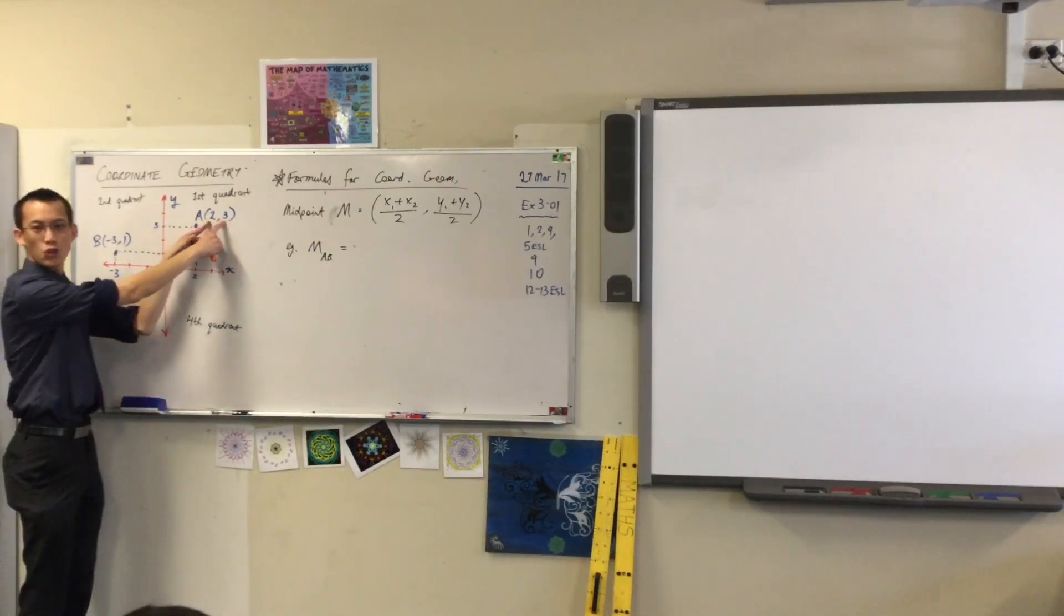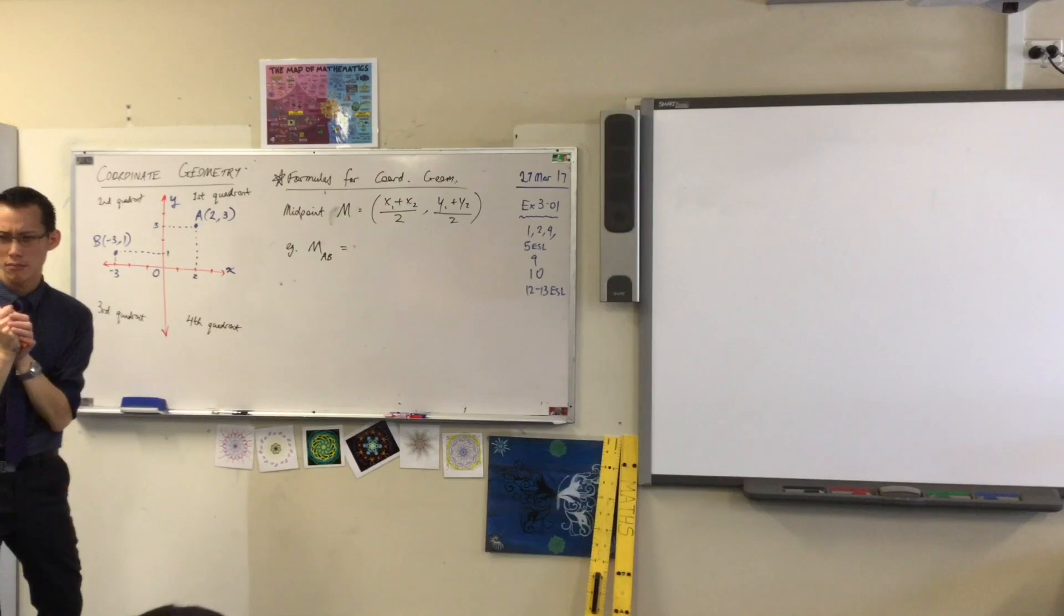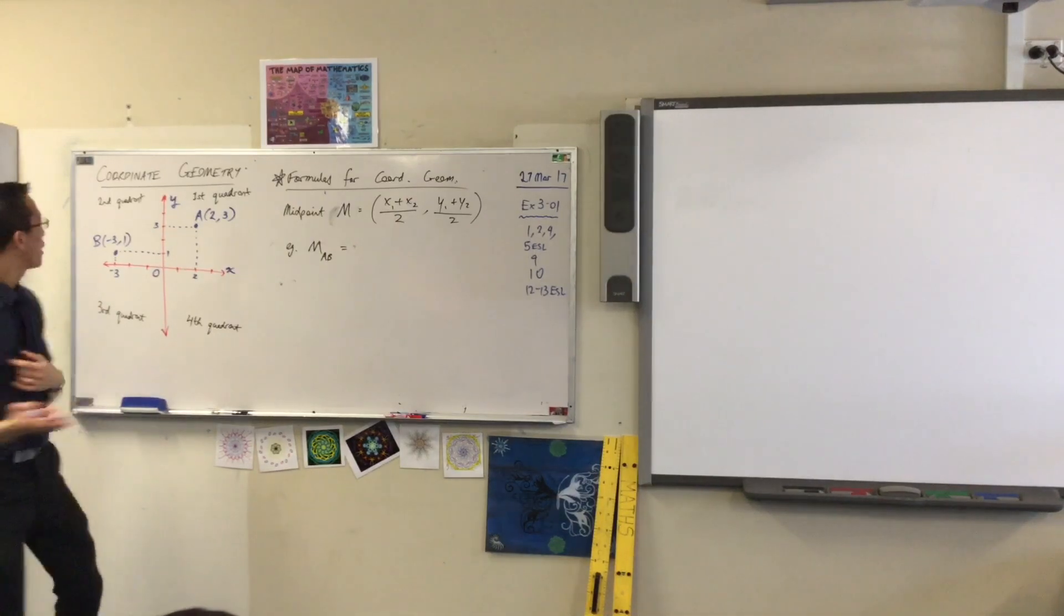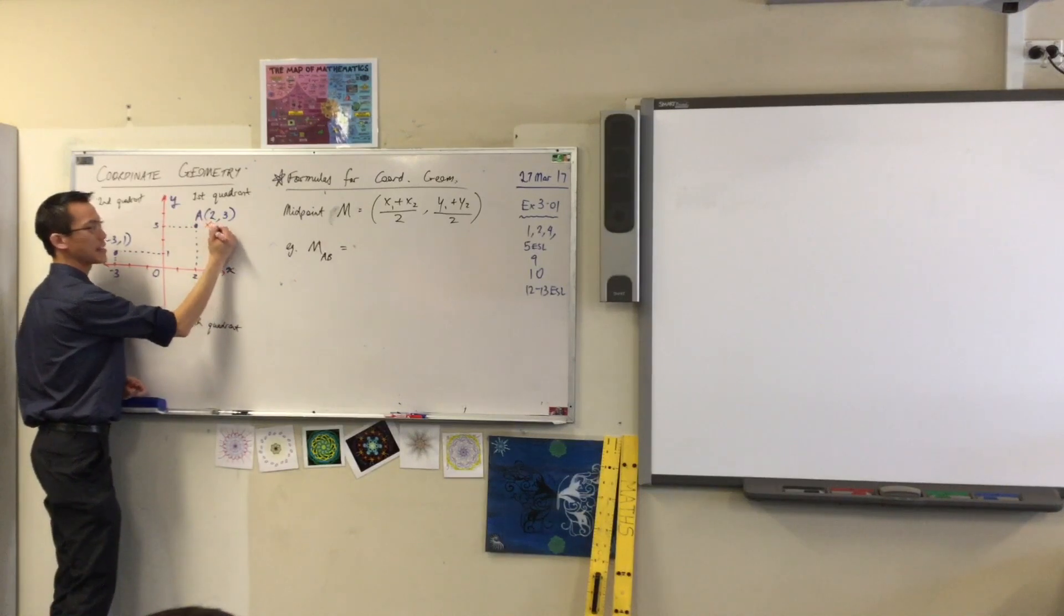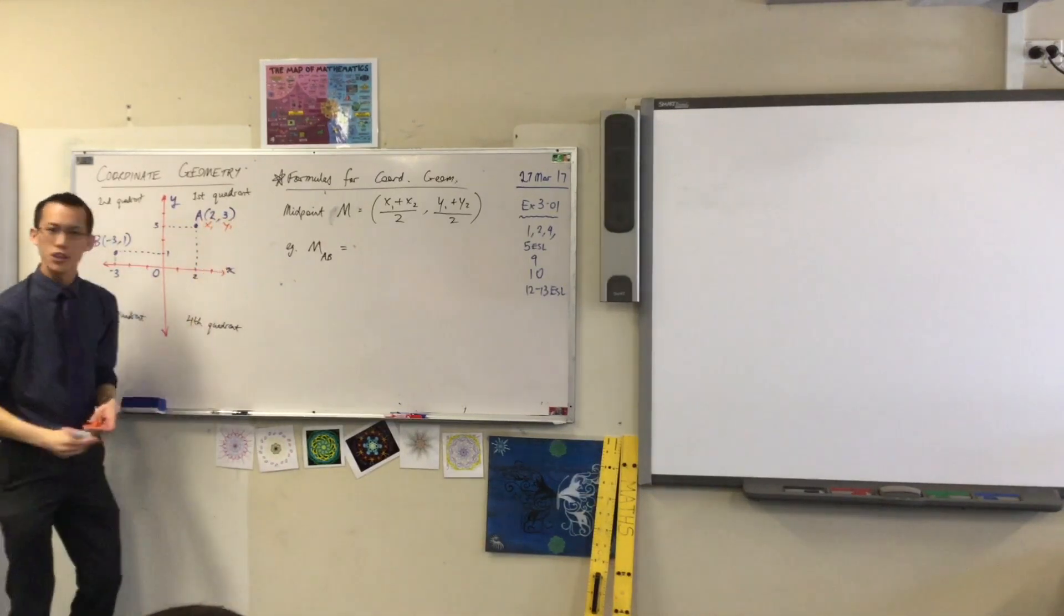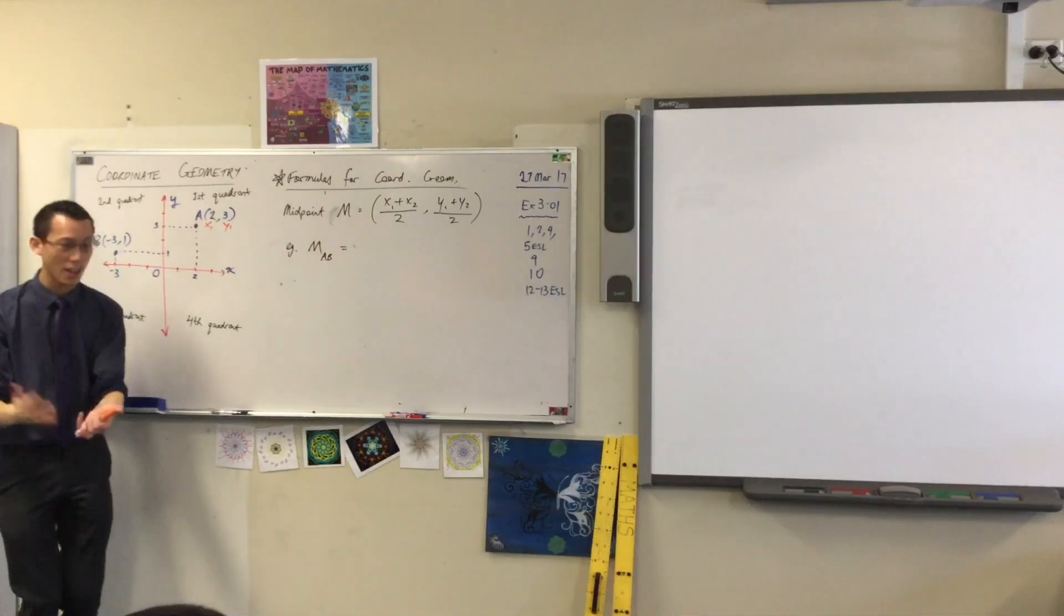I'm actually going to label onto my coordinates which ones are the x's and which ones are the y's. So have a look here. 2, 3. Which one's the x and which one's the y? 2 is x. The x is the 2? Yeah. And the 3 is the y. It's alphabetical. Do you remember that? So I'm going to write this as x1, y1.